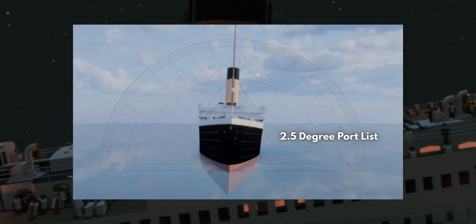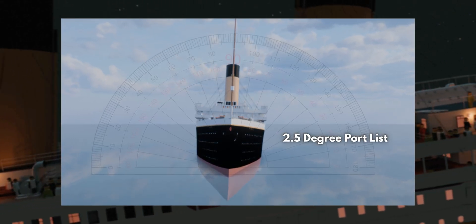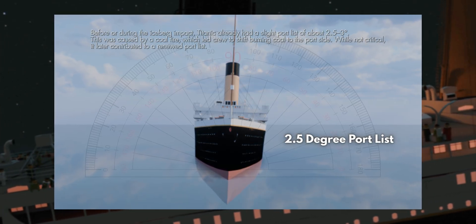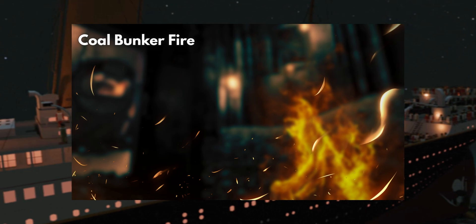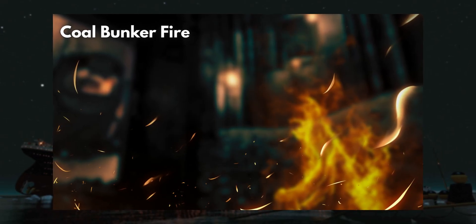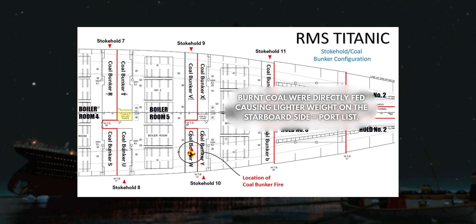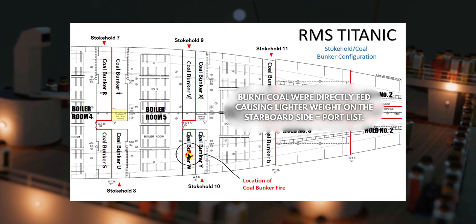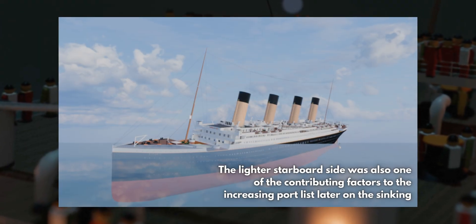Key moment number one: the pre-collision port list. Before or during the iceberg impact, the Titanic already carried a light list to port of roughly 2.5 to 3 degrees. This was caused by the coal fire in Coal Bunker W, located on the starboard side of Stokehold No. 9 in Boiler Room 5. To control the fire, crew members shoveled the burning coal toward the port side, shifting weight unevenly. Although this list had no direct role in the sinking, the redistributed coal later became a minor contributing factor to the renewed port list observed deeper into the disaster.